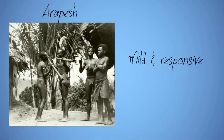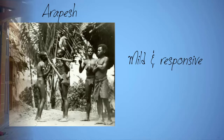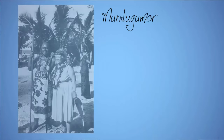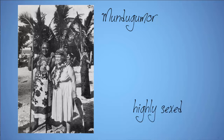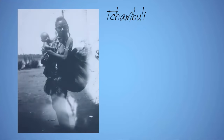She also found no evidence that people were powerfully driven by their sexual inclinations. The Arapesh ideal was of a mild, responsive man married to a mild, responsive woman. Among the river-dwelling Mundugumor, she found both men and women approximated to what Westerners would think of as masculine. Both men and women were brought up to be aggressive, ruthless, and highly sexed. Their cultural ideal was that of a violent, aggressive man married to a violent, aggressive woman.